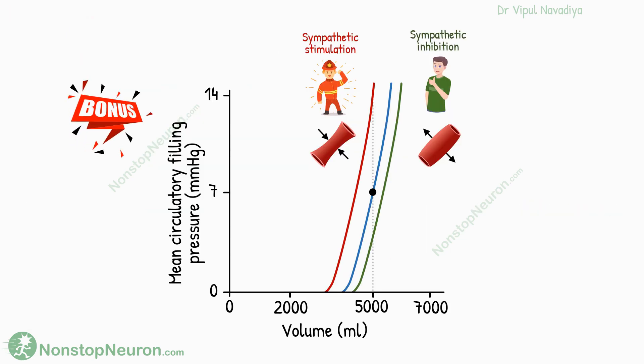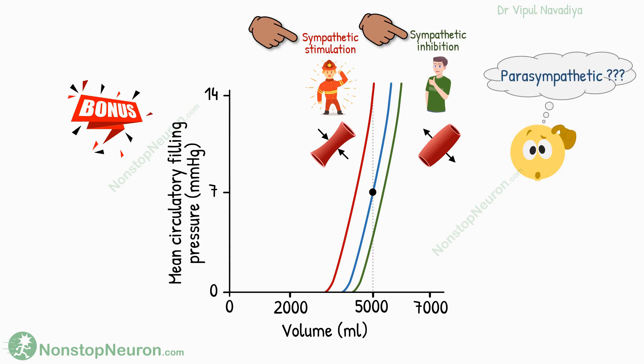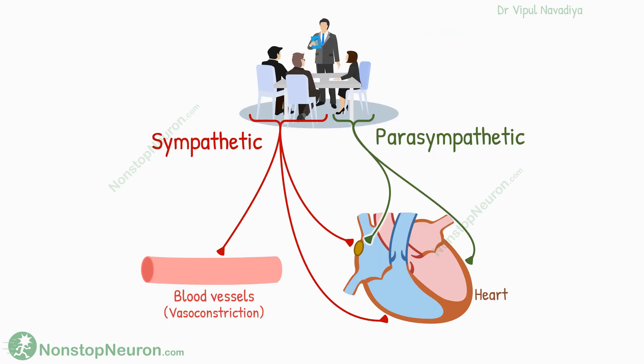Here is a bonus point. In the graph, we studied the effect of the sympathetic nervous system only. You might be wondering about the effect of the parasympathetic nervous system. Well, as discussed in the video on nervous regulation of blood pressure, although the heart receives both sympathetic and parasympathetic innervation, most blood vessels in the body receive only sympathetic innervation — they do not receive parasympathetic innervation. So changes in parasympathetic activity do not produce a significant effect on blood vessels. If you want to know which vessels receive parasympathetic innervation, you can go watch that video.